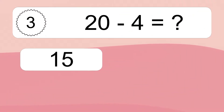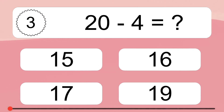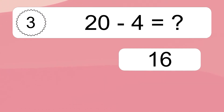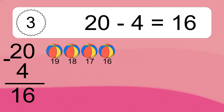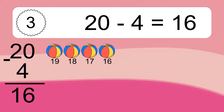20 minus 4 equals what? 20 minus 4 equals 16. Let's count it: 19, 18, 17, 16.